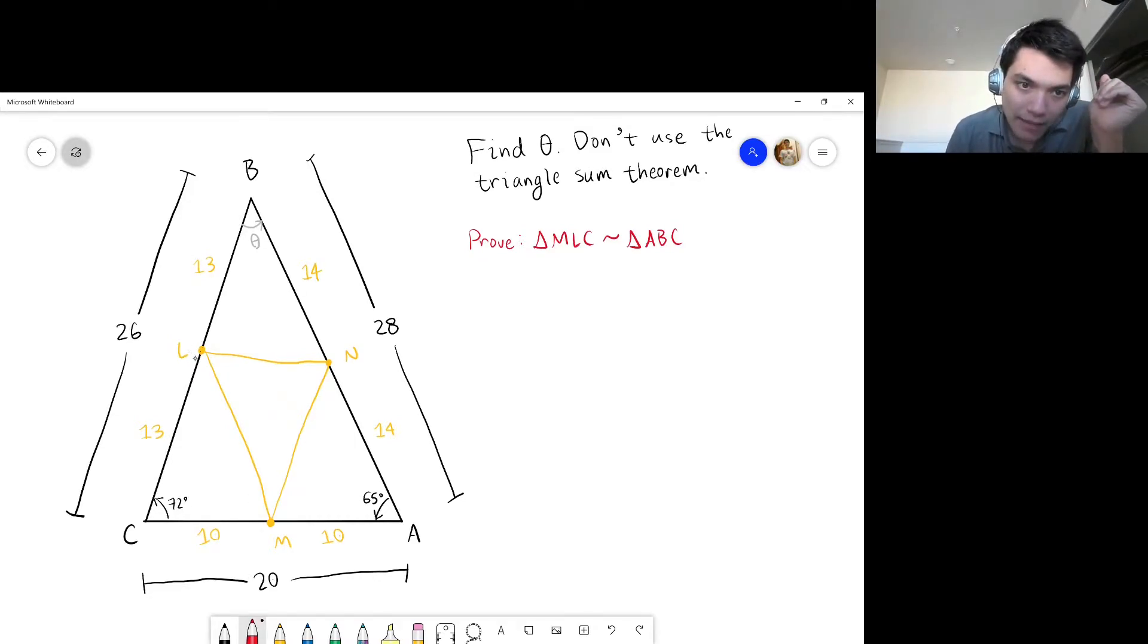So, let's walk through this. Segment BC, that's equal to two times segment LC. LC is 13 units long. BC is 26, which is two times 13. So that's the first side.